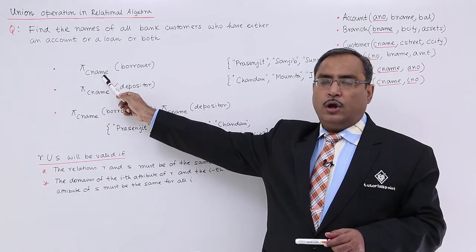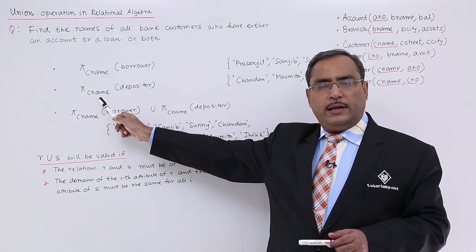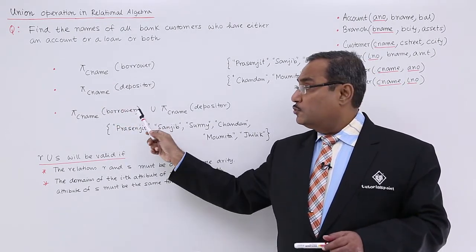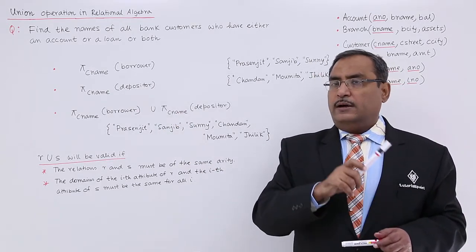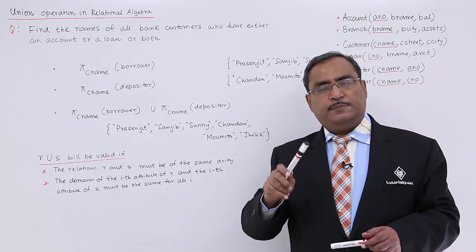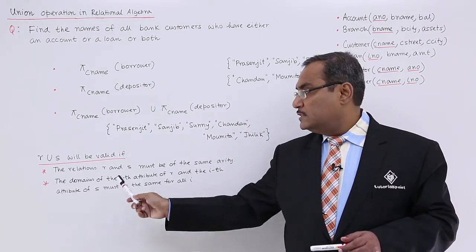How many attributes we are having here? Only one. How many attributes we are having here? Only one. So that is why we could do the union operation between them. So if R is having two attributes, then S must be having two attributes. That is the first condition.